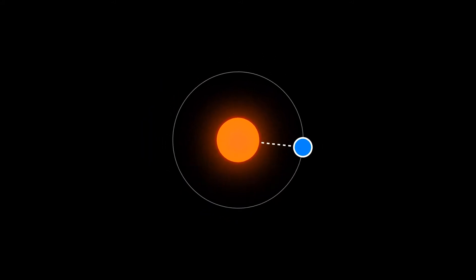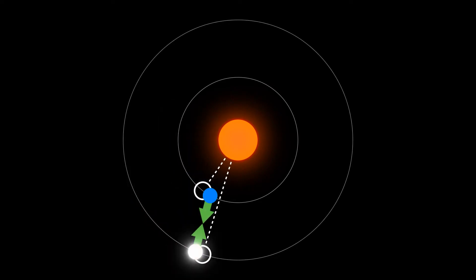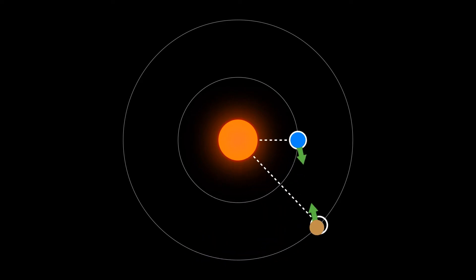However, adding another nearby planet messes this up a little bit. The mutual gravitational pull between the planets will speed them up or slow them down in different parts of their orbits. The timing is no longer perfect.